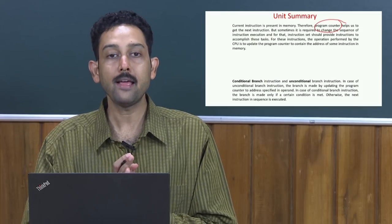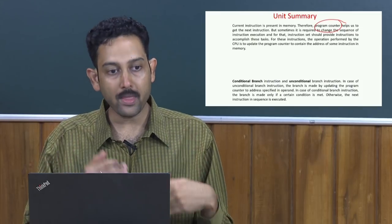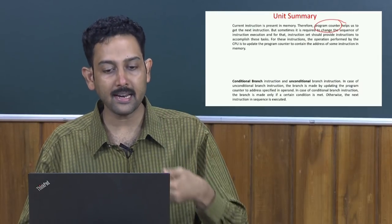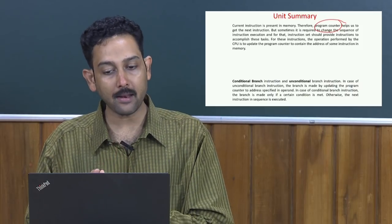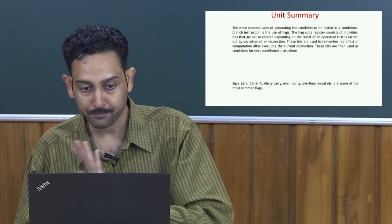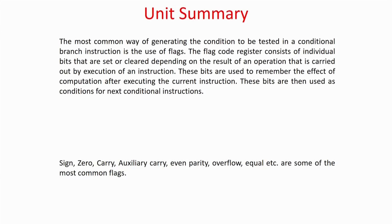In this unit we are going to look at what conditional instructions are, how they change the program counter, where they are stored, and the internal dynamics. There are two types: unconditional branch and conditional branch. Then we will look at what actually determines a condition. In hardware, conditions are reflected in terms of certain flag bits in a register called the flag register. Inside the flag register, certain bits are allocated for important parameters like sign, zero, carry, parity, overflow, equality, etc.